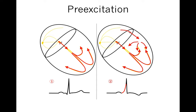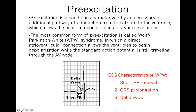The AV node has decremental properties — it delays depolarization before it reaches the ventricles, giving us a PR interval. Accessory pathways, most of the time, do not have the same properties; electrical signals arrive and go through right away without being delayed. Hence, there is sudden depolarization between the P-wave and the QRS, creating slurring with shortening of the PR interval, and we call this a delta wave. You get a P-wave with a very short PR interval, then slurring — the delta wave — into the QRS.